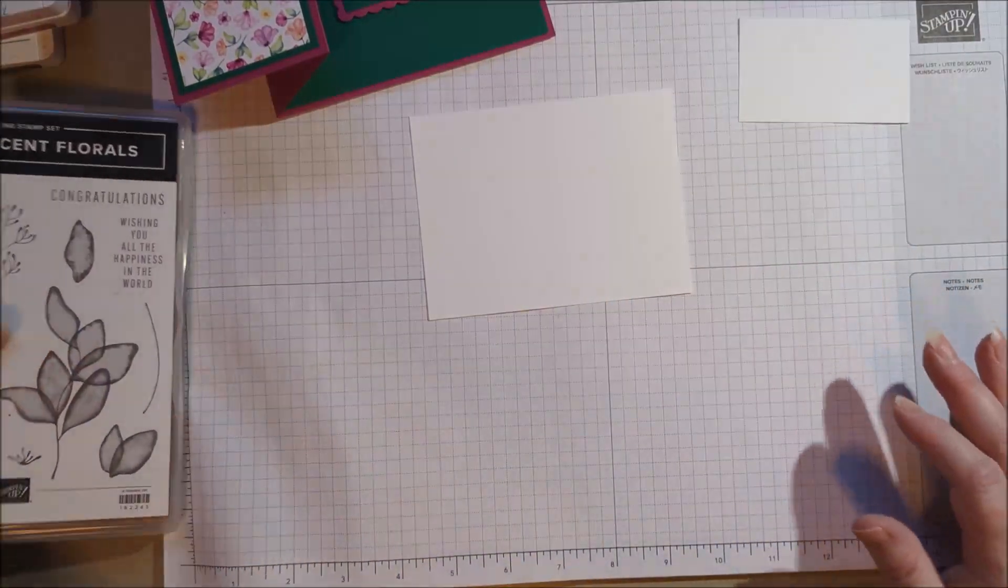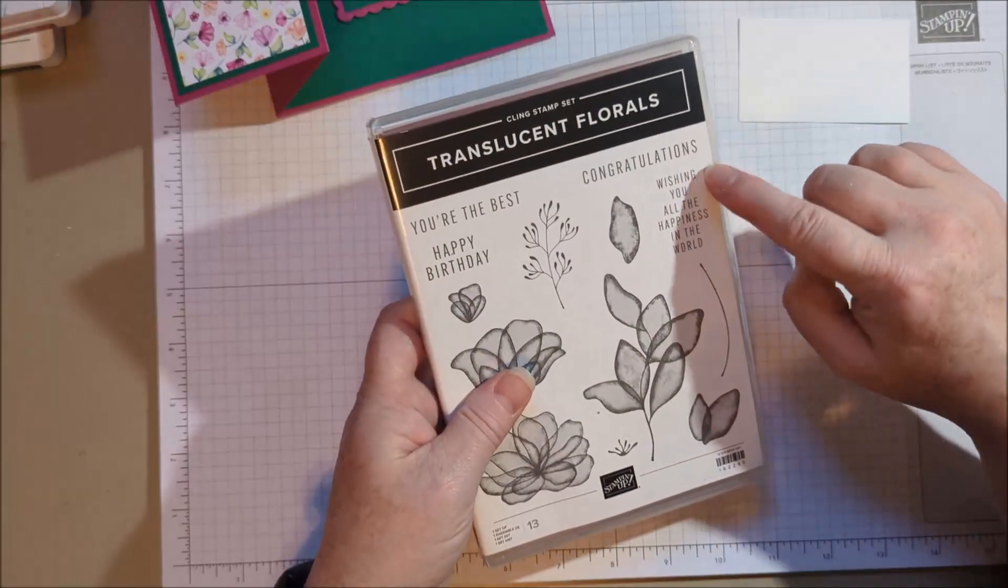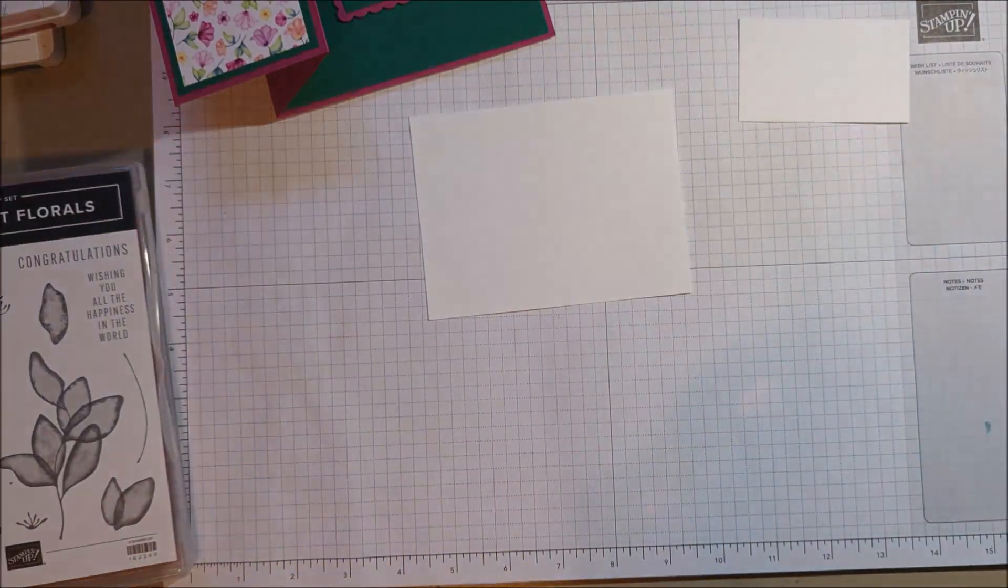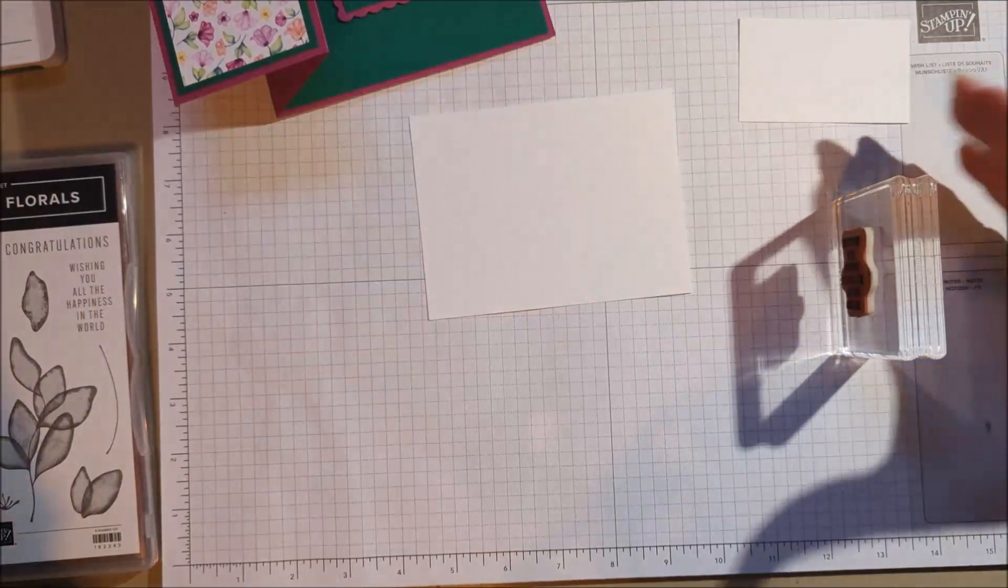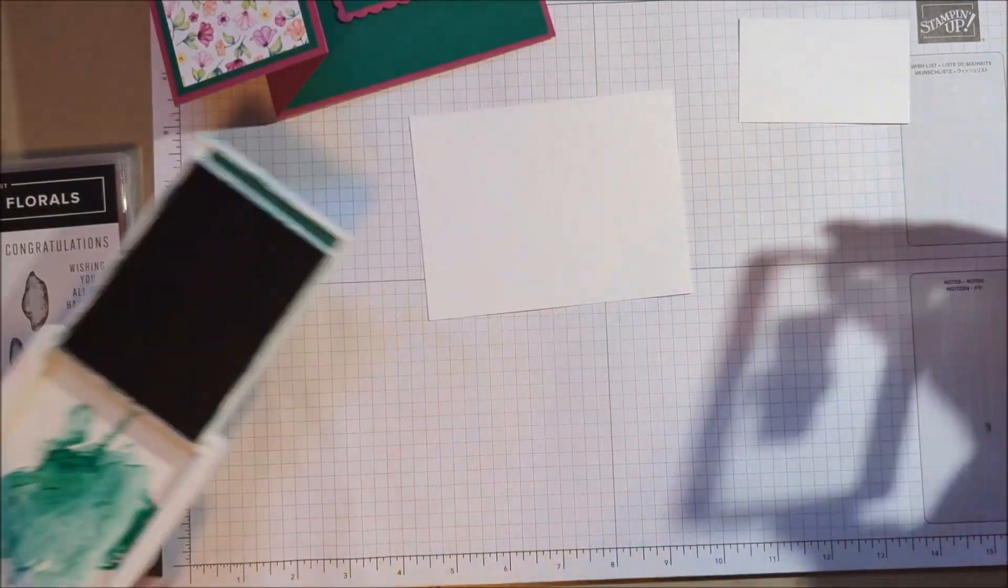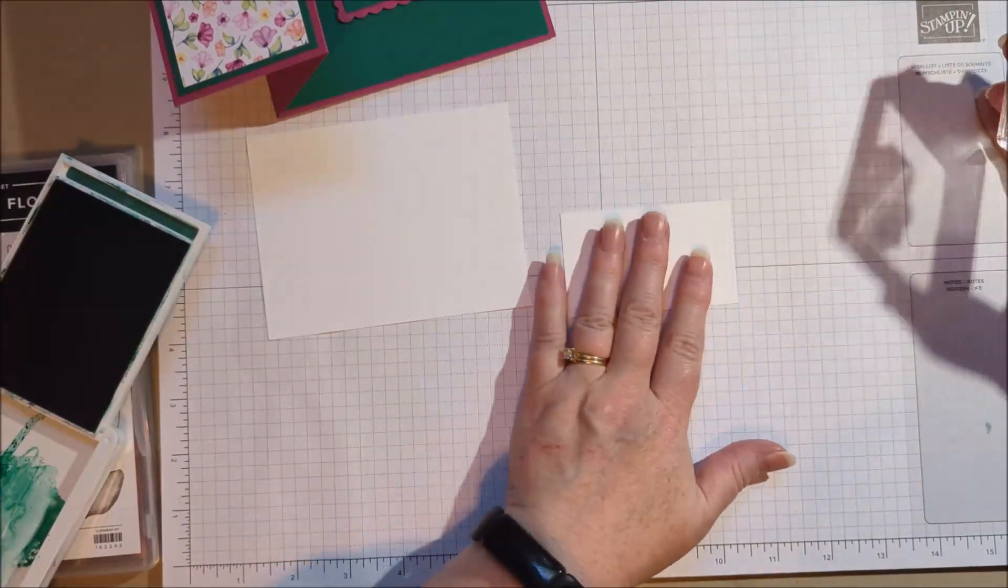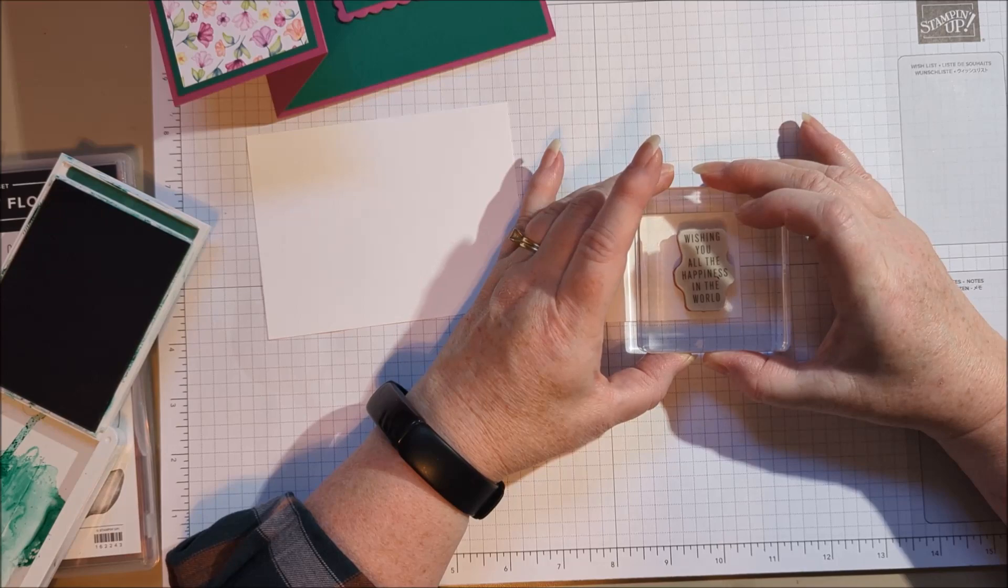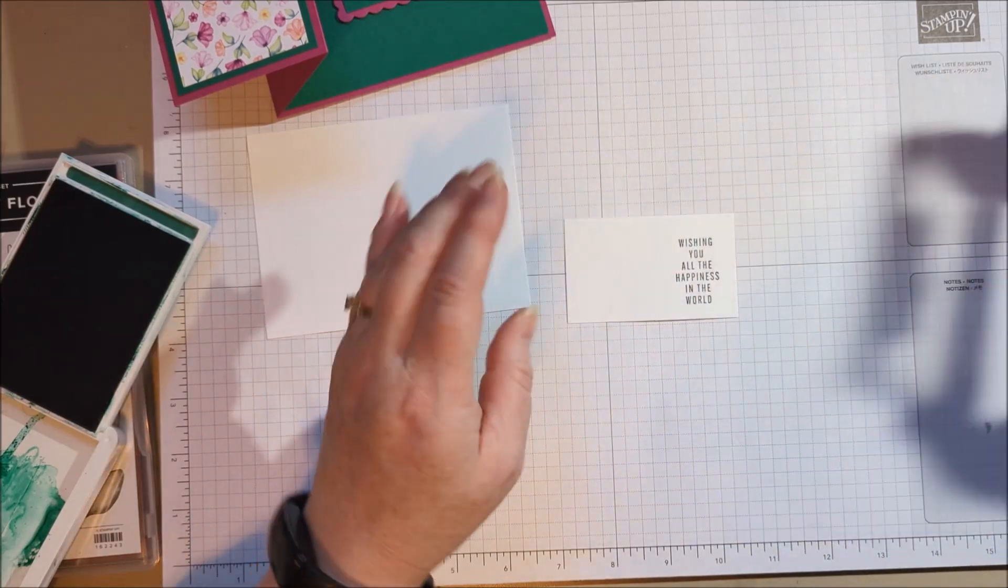So this stamp set has some really great sentiments. And we're going to use, I like this, that it kind of has the words going down. So I wanted to use that one. That's fun. And I'm going to stamp my sentiment in shaded spruce onto the right side of this rectangle piece.